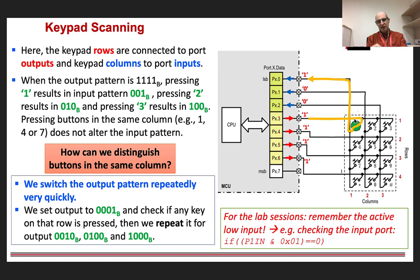So the way we do that is that we scan the row identifiers, so the row outputs, we scan them rapidly.